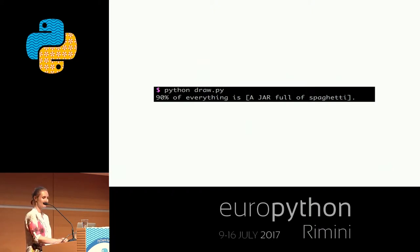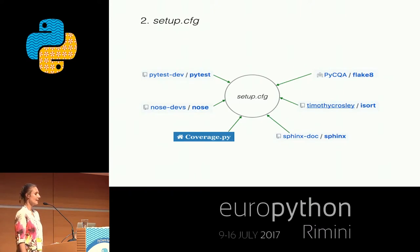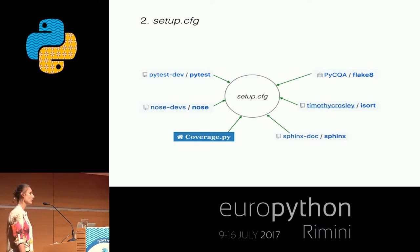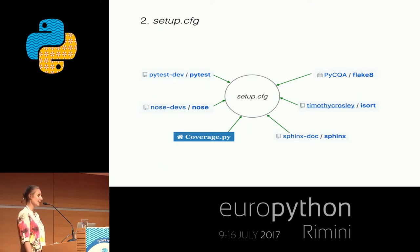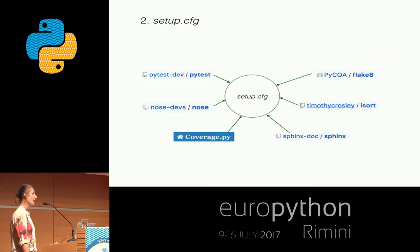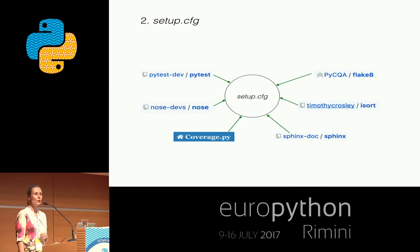setup.cfg — setup config is a file where we can configure our setup. We can include metadata about the project and it can also serve as an interface for configuring different command line tools. For example, we can configure pytest, nose, coverage, flake8, isort, or sphinx. Each of these tools could be configured in its own separate RC or INI file, but we can choose to have one common interface. In the case of DevOps Against Humanity we will use setup.cfg to configure our tests.